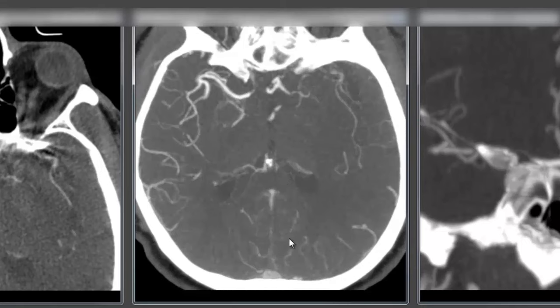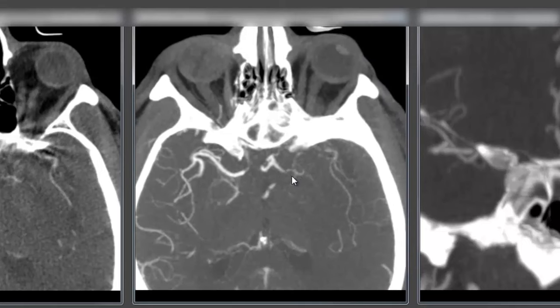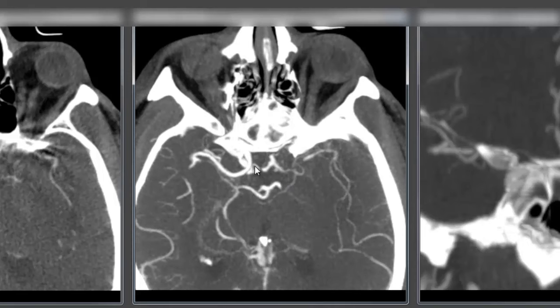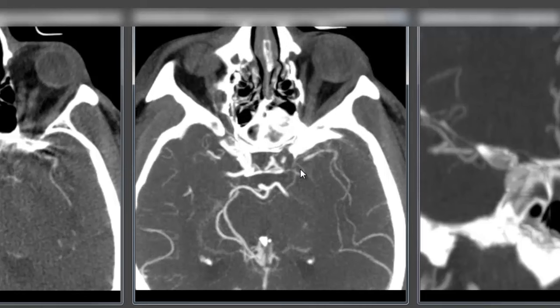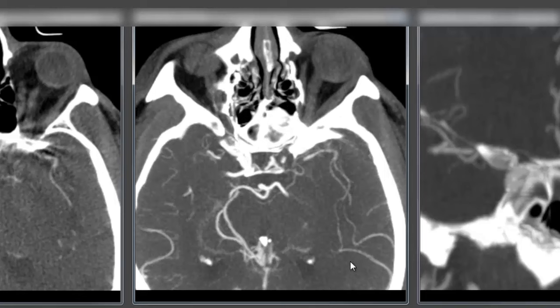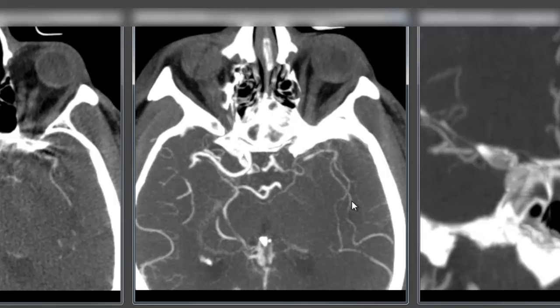If we look at the axial thick MIP reconstructions we see a similar picture but better visualized. Again we see the normal carotid here, no filling of this carotid which appears to be a clot at the carotid terminus with some reconstitution by collateralization down to the level close to the clot in the middle cerebral artery but very thready contrast opacification in the MCA territory.